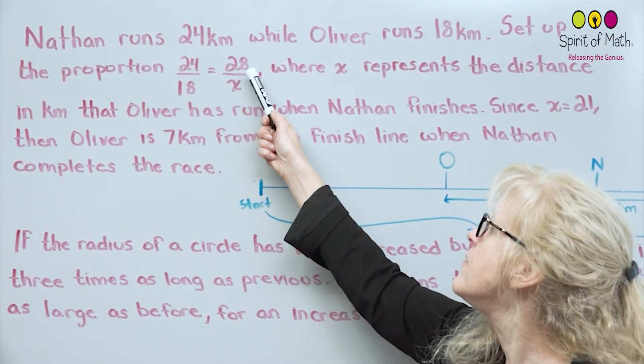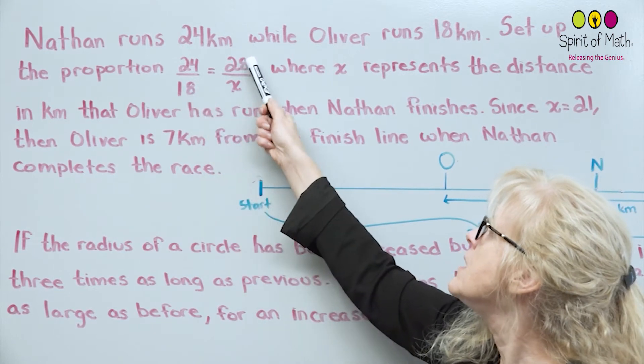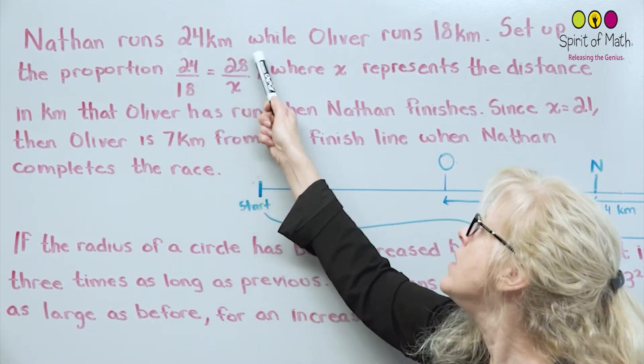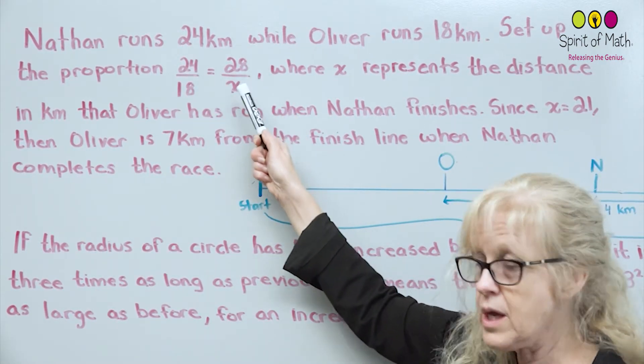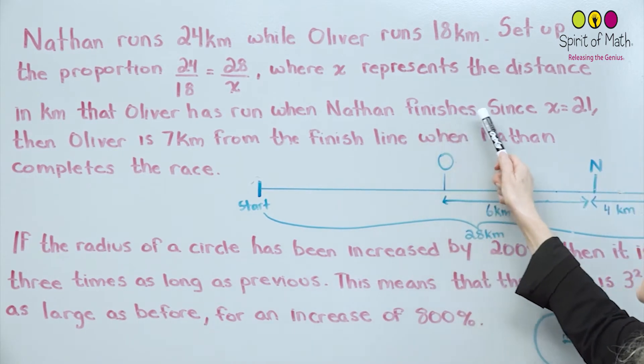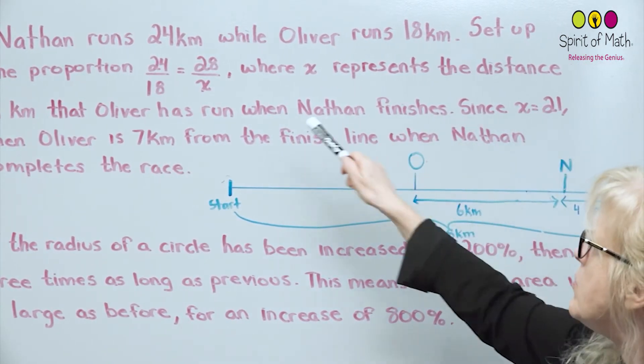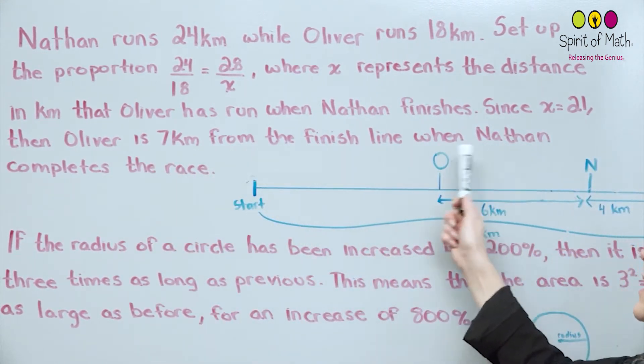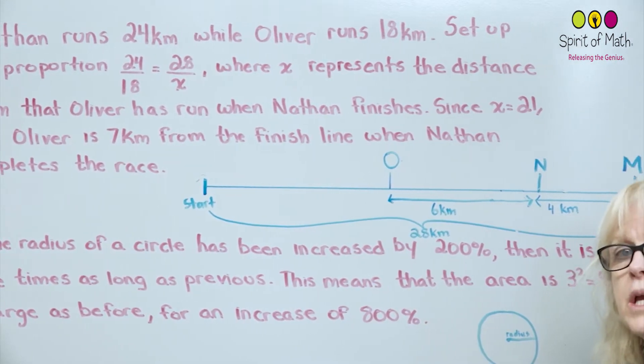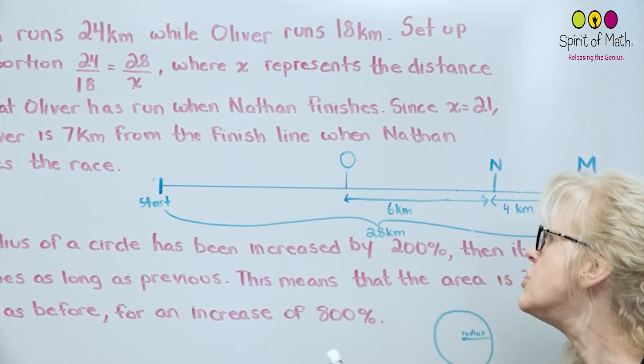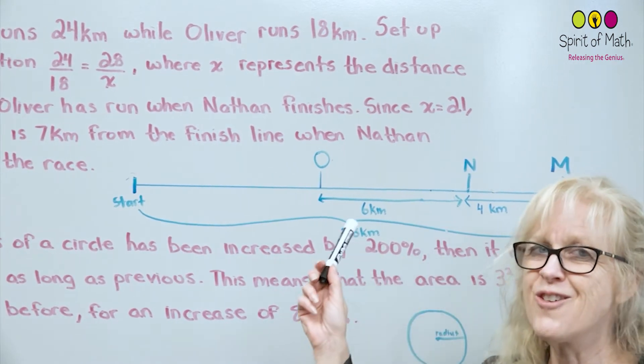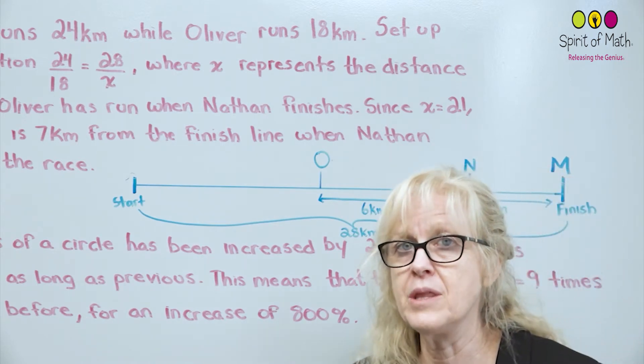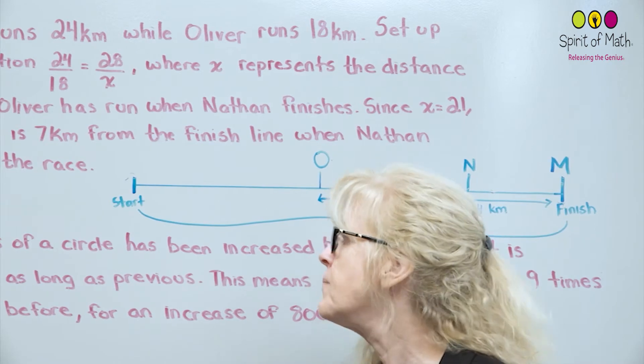So that's what's happened there. Since X is equal to 21 when you calculate that, then Oliver is 7 kilometers from the finish line when Nathan completes the race. And that's really it. So it's the ratio. Don't just jump ahead, and you'll notice that even in the question, 6 is not an answer. It's not an option for an answer. So there's got to be a different way to think about this. And it is the ratio of the things that you have to look at.